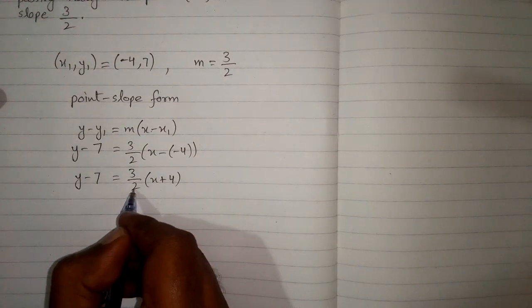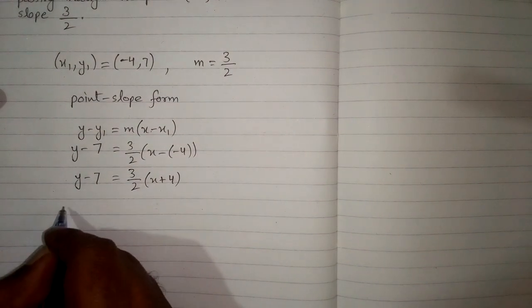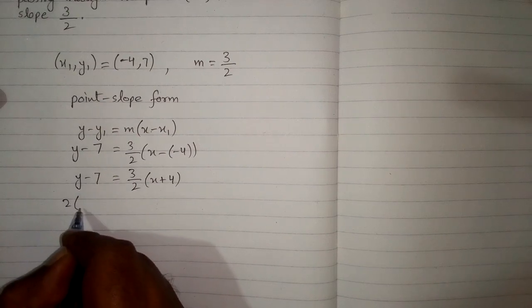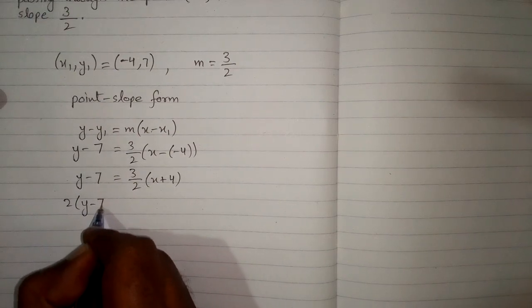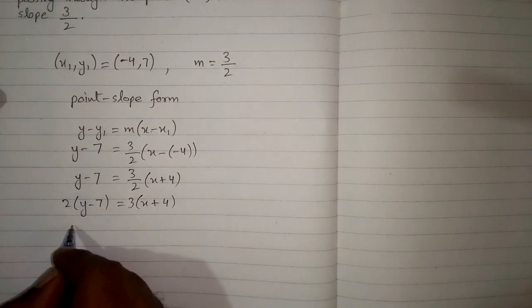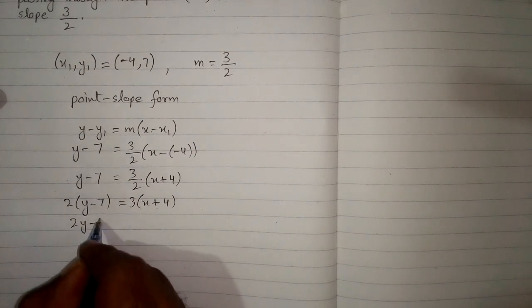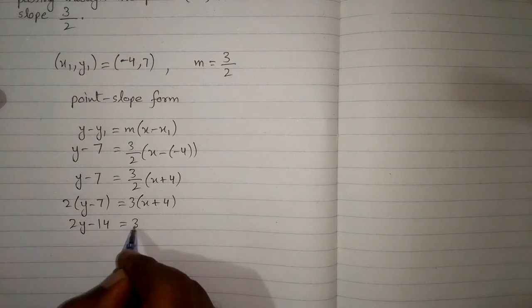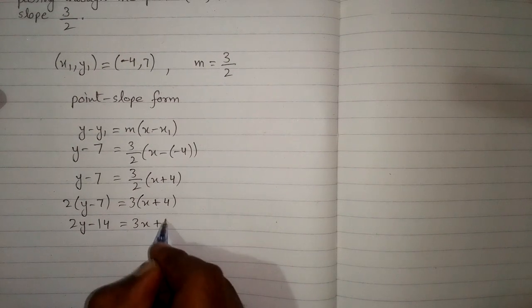Now we can take this 2 on the other side of the equation. So we have 2 times y minus 7 is equal to 3 times x plus 4. Now we will expand the brackets so we have 2y minus 14 is equal to 3x plus 12.